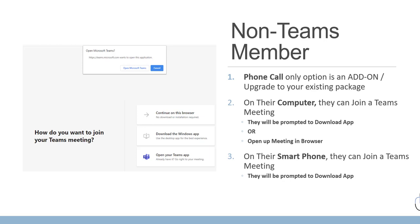If you invite non-Teams members to a meeting, if they get the invite on their phone they will be prompted to download the Teams app. If they get it on their computer, they can either join via web without downloading anything, download the Windows app, or download the Teams app. If you want them to join with a phone number, you need the right Microsoft Office package — the enterprise package or the add-on for phone services. With Microsoft Office 365 Business, you won't be able to dial into a Teams meeting.